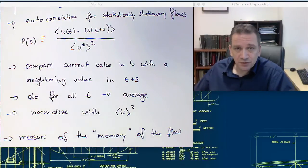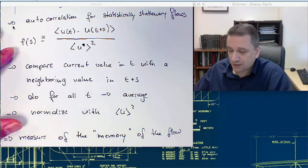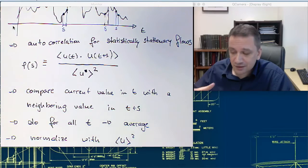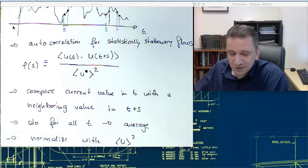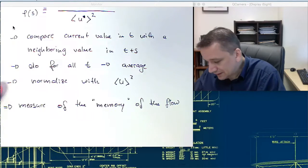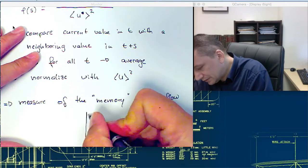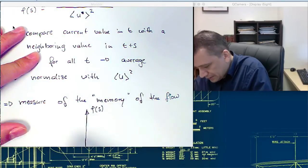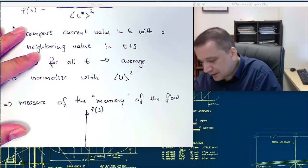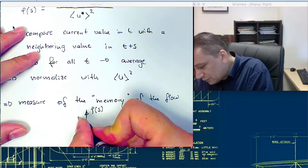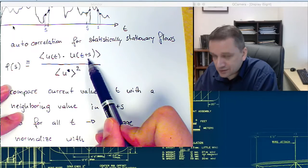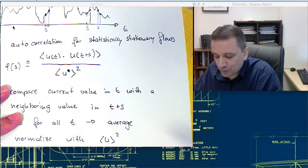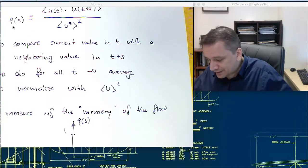If the signal is highly correlated, so if the correlation values are large, then this value, the autocorrelation, is going to be large. If it's small, that means that the gradients are very large, so it means it's forgetting the signal quite quickly. So for example, if I plot here ρ(s) as a function of s, at zero it's always going to be one. The reason for that is if you put here zero for s, you're going to have here u square, u square over u square is going to be one. So the values are always going to be one in the center, at zero.